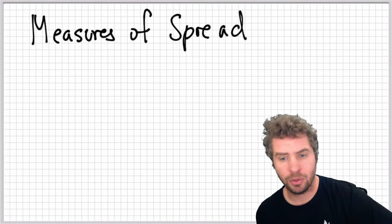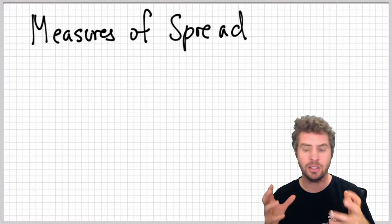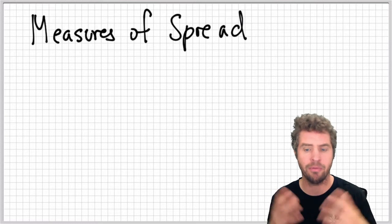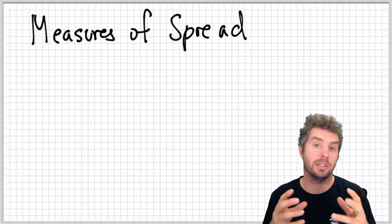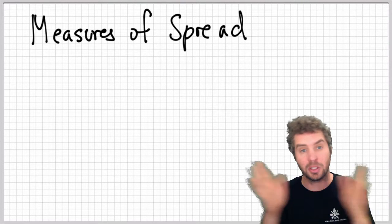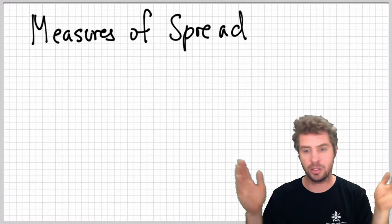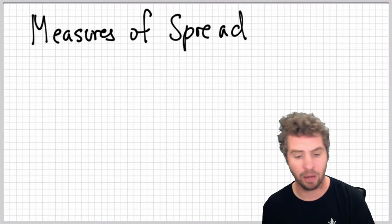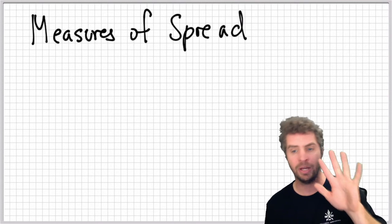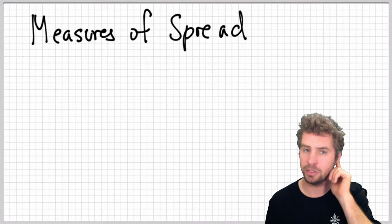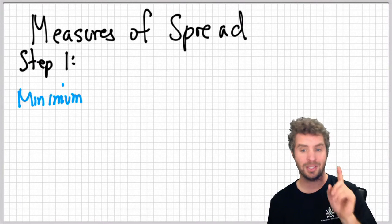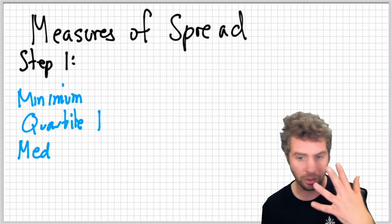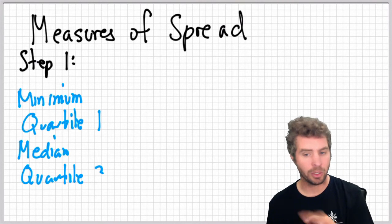First of all, to find some measures of spread, to get some information on how the data that we're going to be looking at in statistics is spread out, how it spreads and how it's distributed across the spectrum of the values that you have. We're going to get five values, five specific pieces of information from some data. So the first step in doing this is getting those five pieces of information, and then we're going to use those in a minute.